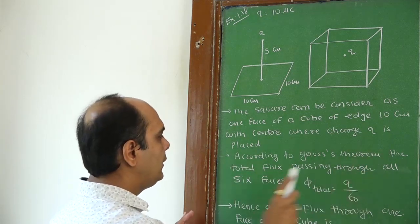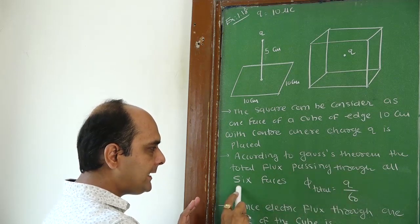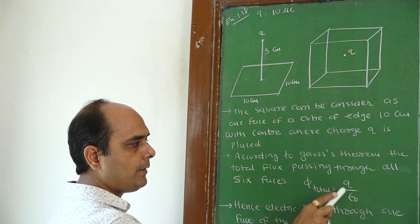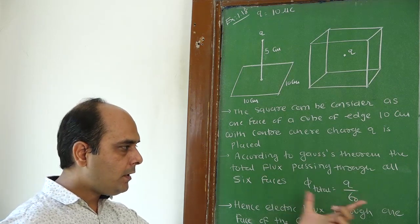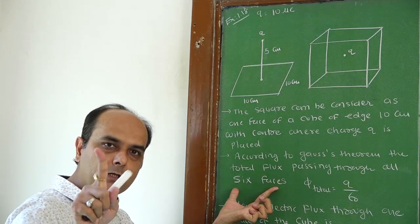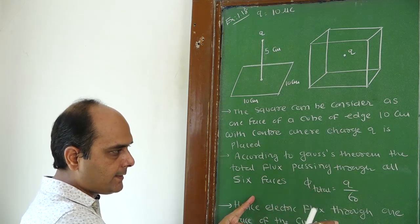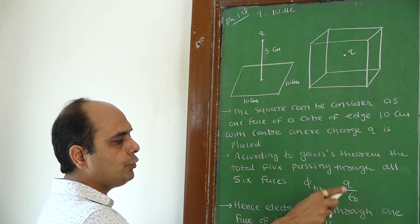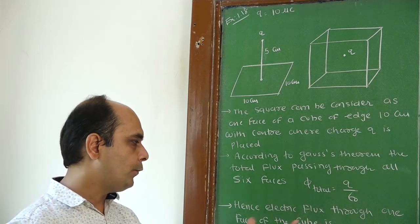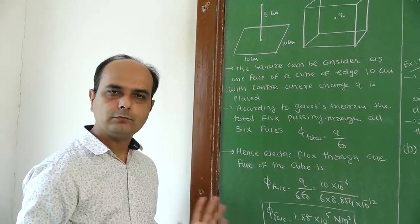According to Gauss theorem, the total flux passing through all six faces is Φ_total = q by epsilon 0. This is the flux due to six faces. We require the flux due to only one face. Due to one face, flux is less, so the answer will be q by 6 epsilon 0.